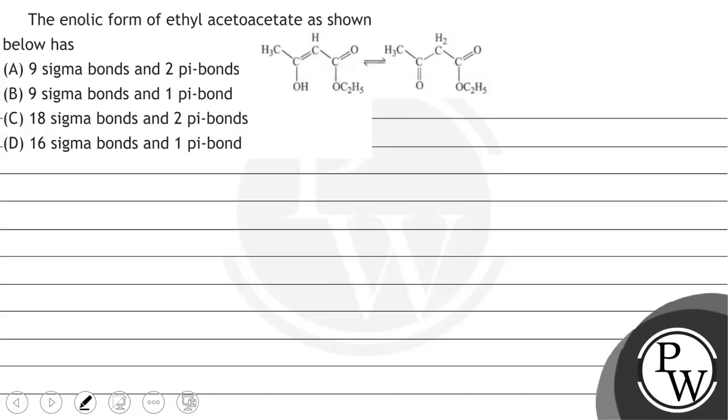Hello, let's read the question. The question says that the enolic form of ethyl acetoacetate is shown below.